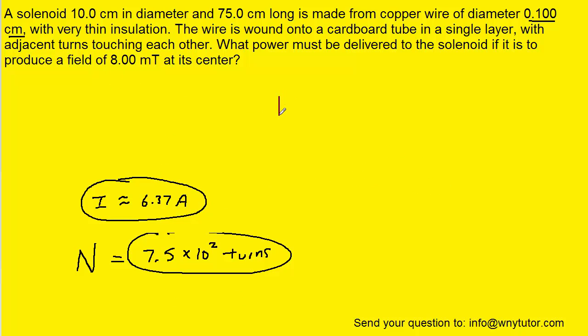Now to get the actual length of wire required for this solenoid, we have to take the number of turns and multiply it by the circumference of the solenoid. And to clarify that point, remember that we're wrapping a wire around a solenoid. We determined earlier that we need 750 turns. So we have to wrap this 750 times.